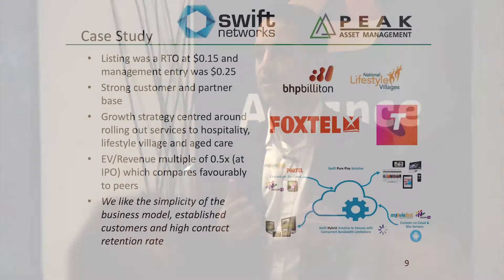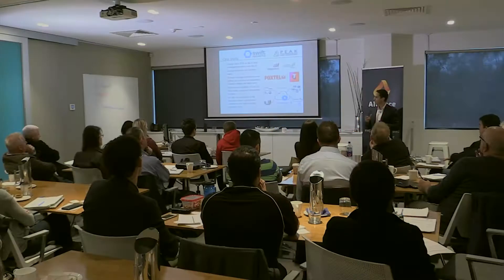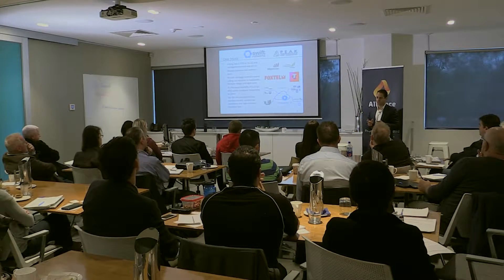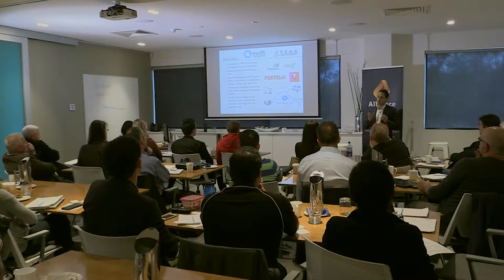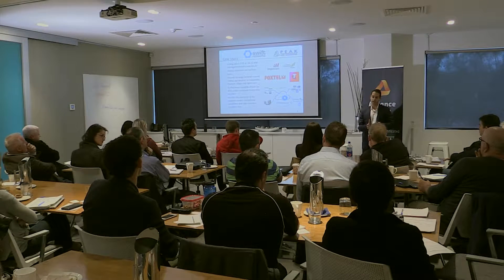What Swift does is what's known as a content as a service model — similar to SaaS. They have content, relationships with Foxtel and Optus, and their own brand called Wizzy TV. They distribute that content into mining camps. What we liked about Swift more specifically is their ability to take that solid model — they were doing about $14 million of revenue — and grow into different verticals, whether aged care or hospitality.